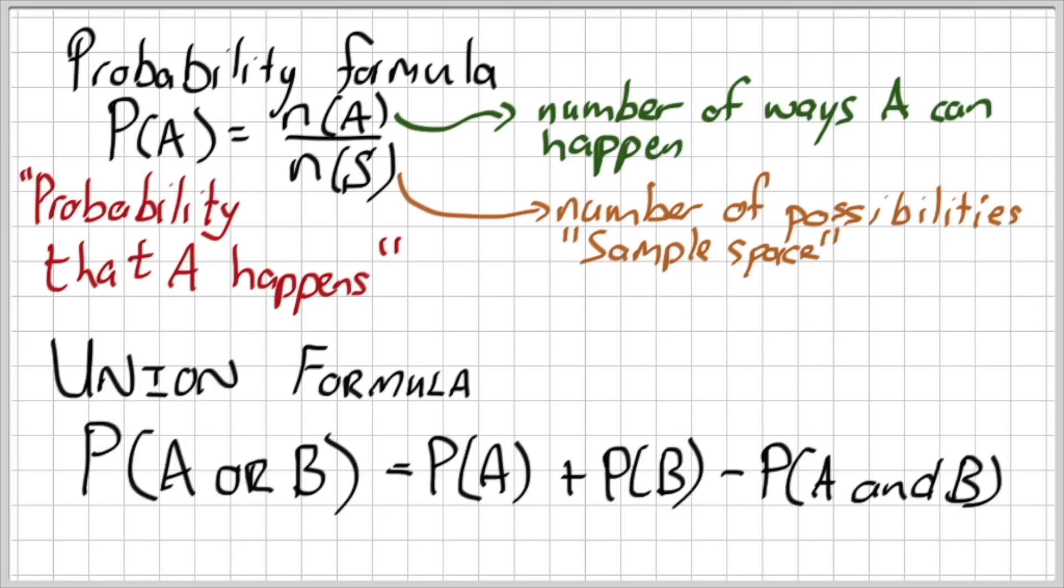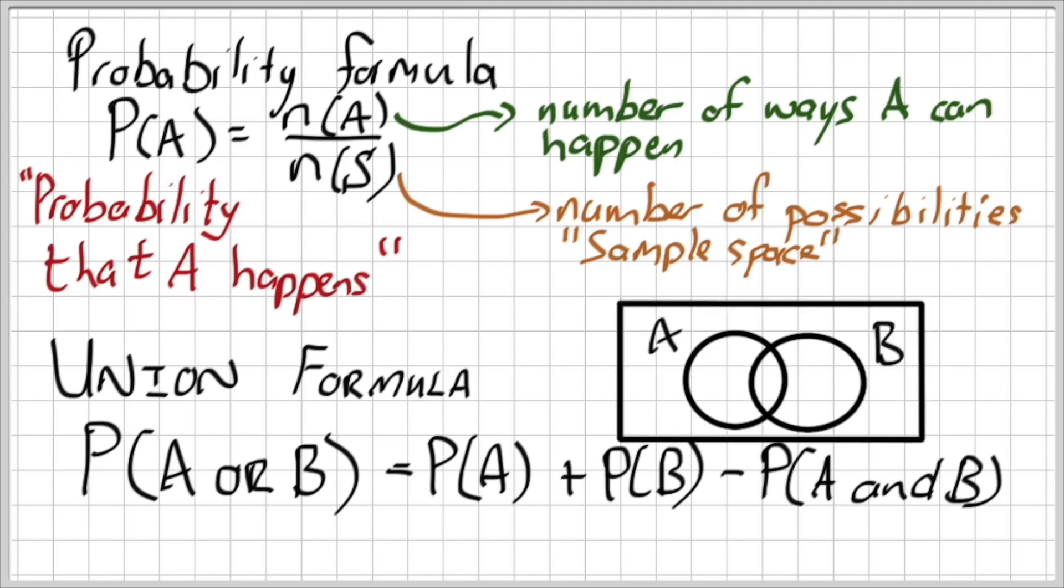A very important other formula that you are going to spend time on in this whole chapter, randomly at times, you are going to get to the union formula, which says the probability that A or B happens is the probability of A plus the probability of B minus the probability of A and B. So if I look at this, where does this formula come from? Let's look at a Venn diagram. I know we haven't spent much time on Venn diagrams so far, but it's important that you understand where a formula comes from.